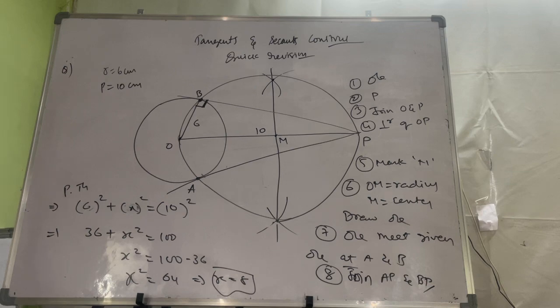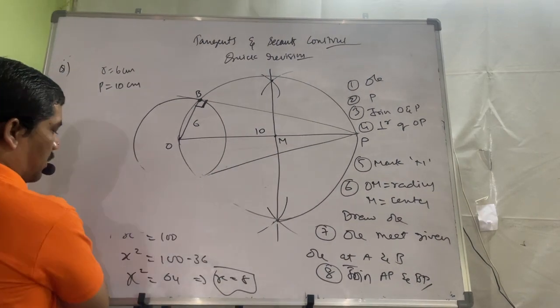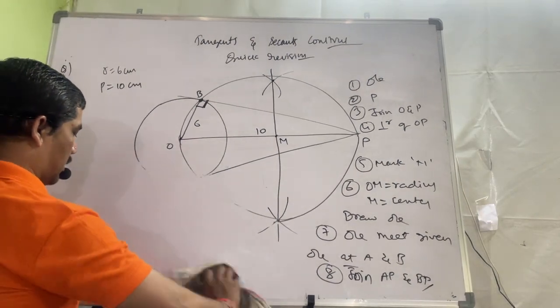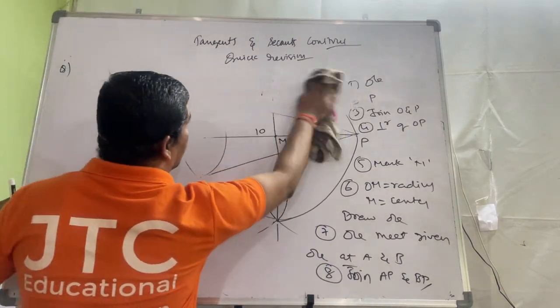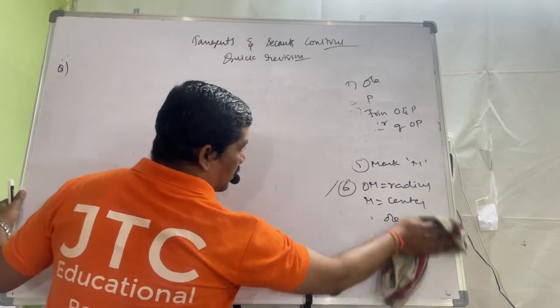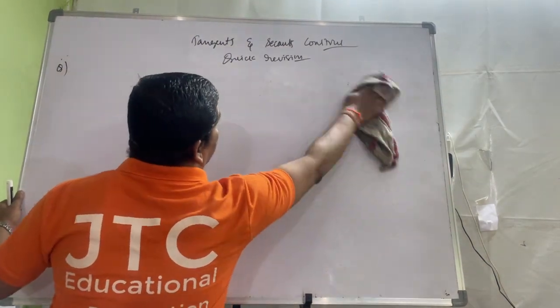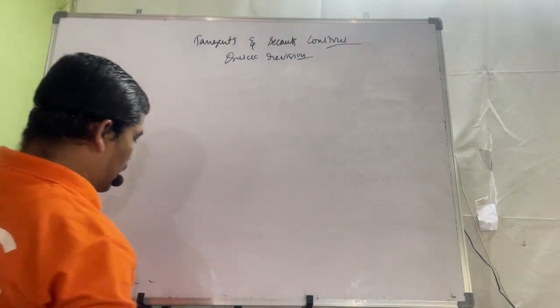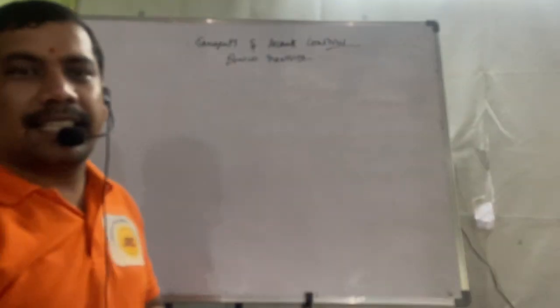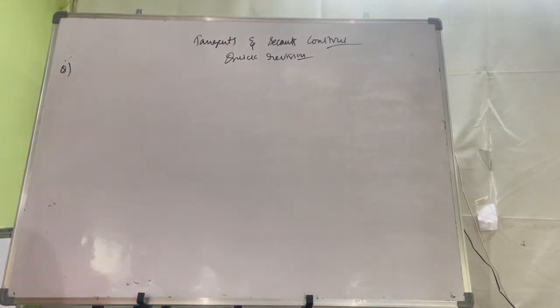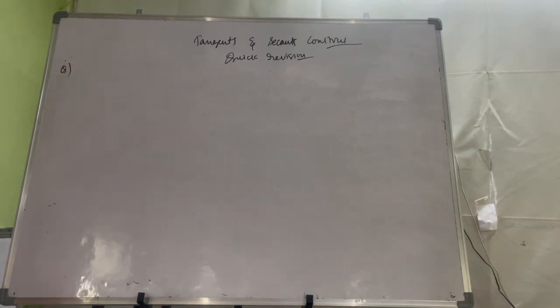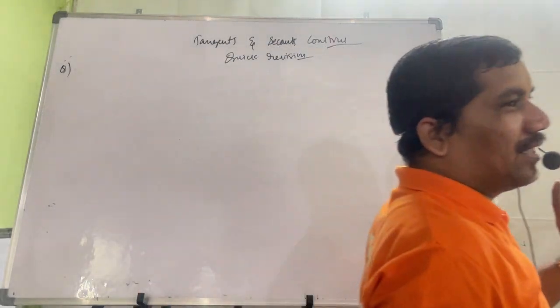Clear everyone? Now, in this type of questions, a little bit different questions they will ask. Sometimes they will give the question like two concentric circles are given.